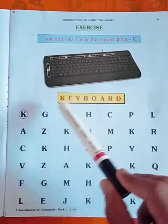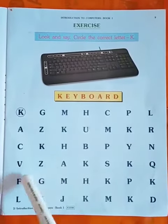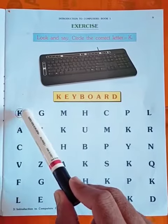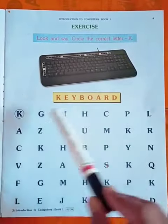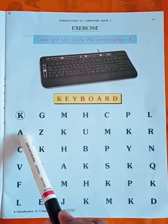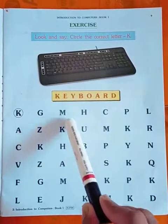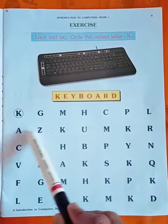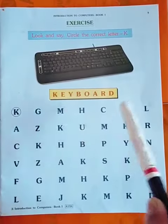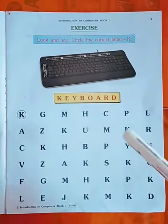Here some lines of alphabet are given and you have to circle the letter K in that line, just like done in the first question. Second question, you have to find K and circle that letter. In this line there are two K letters, so you have to circle it two times.